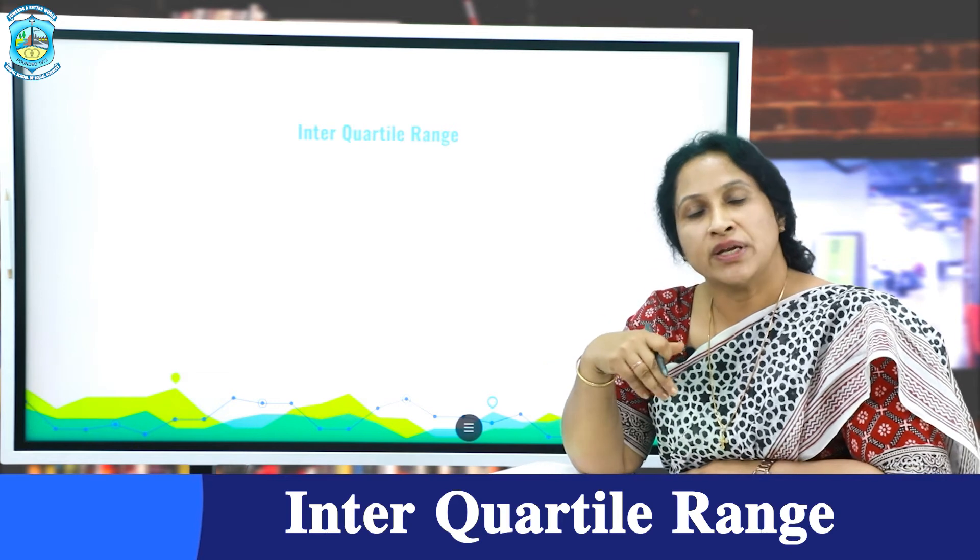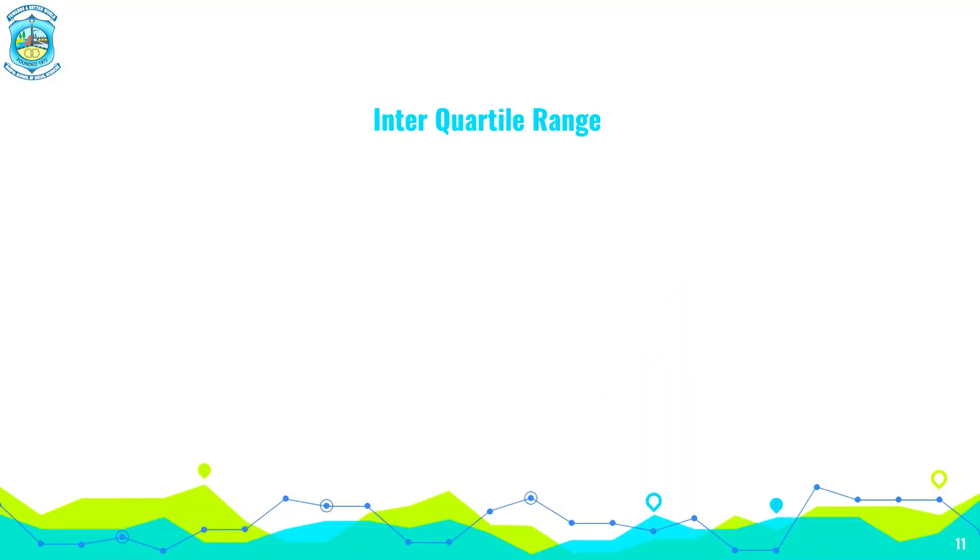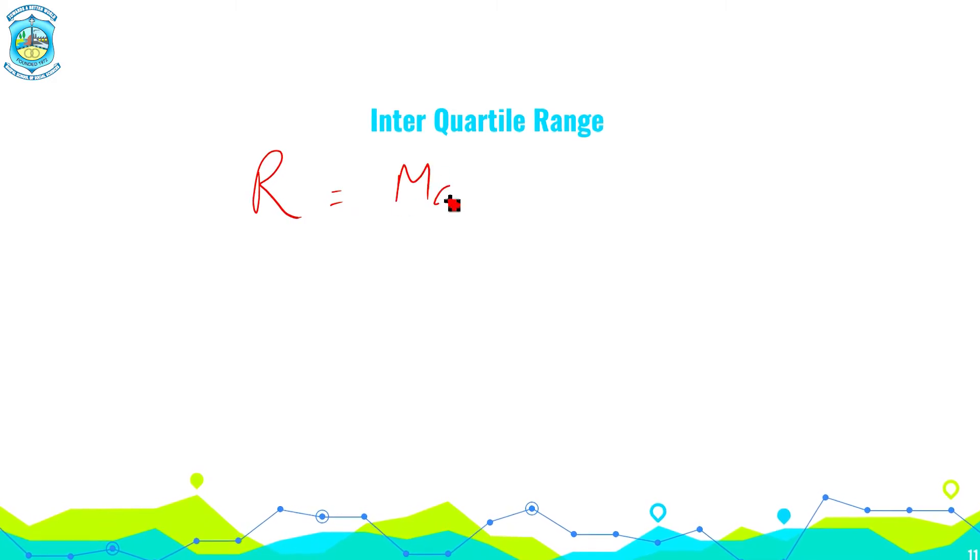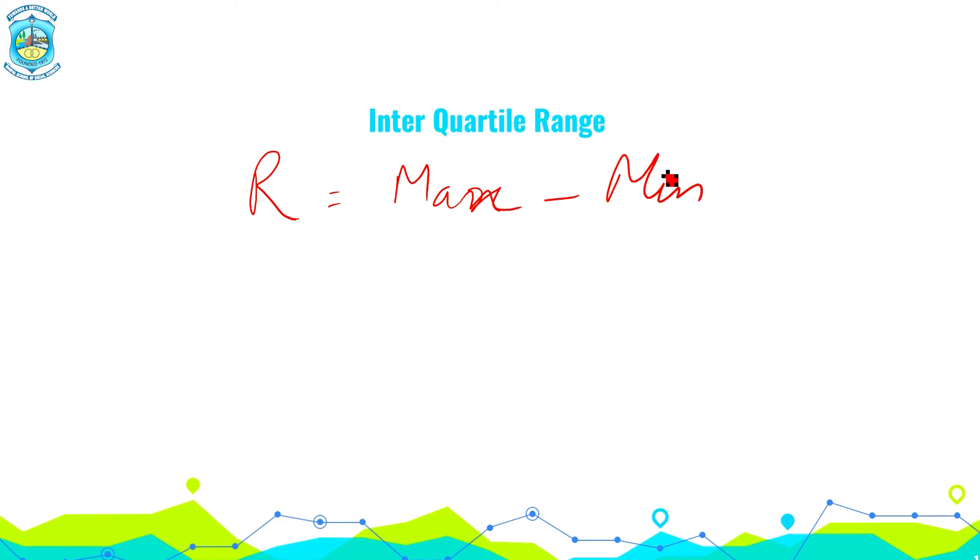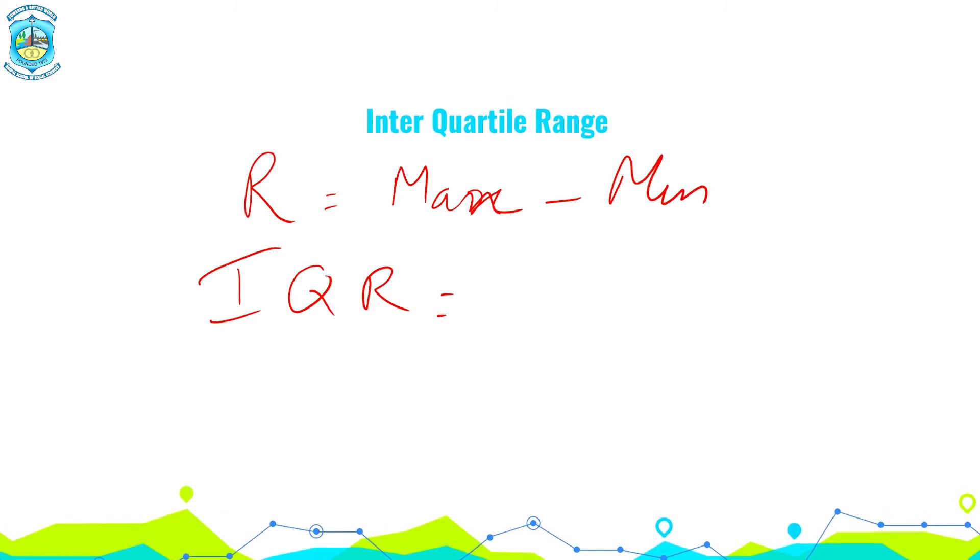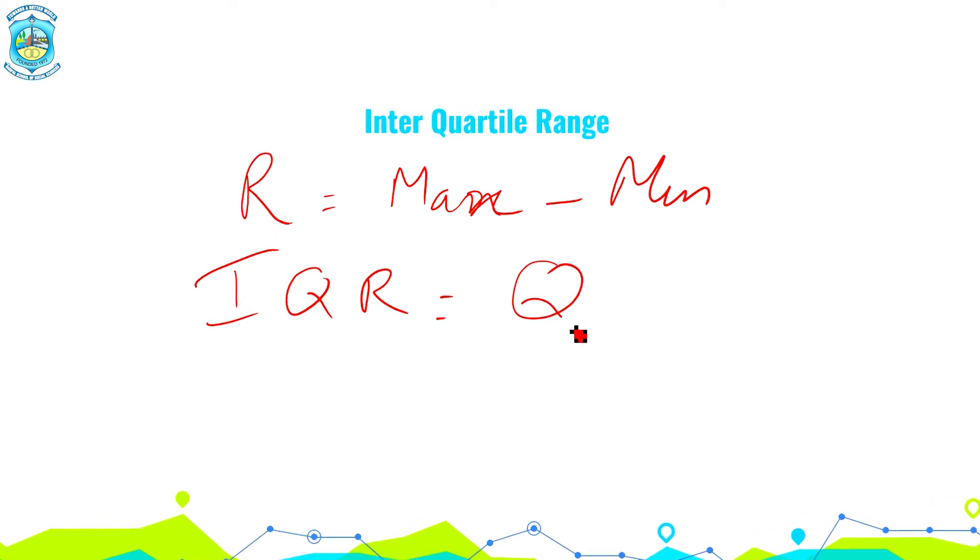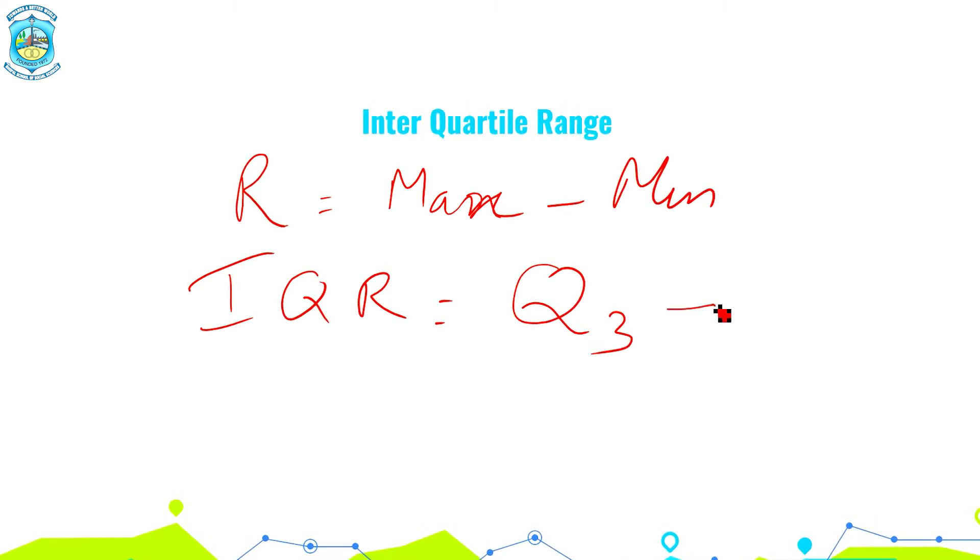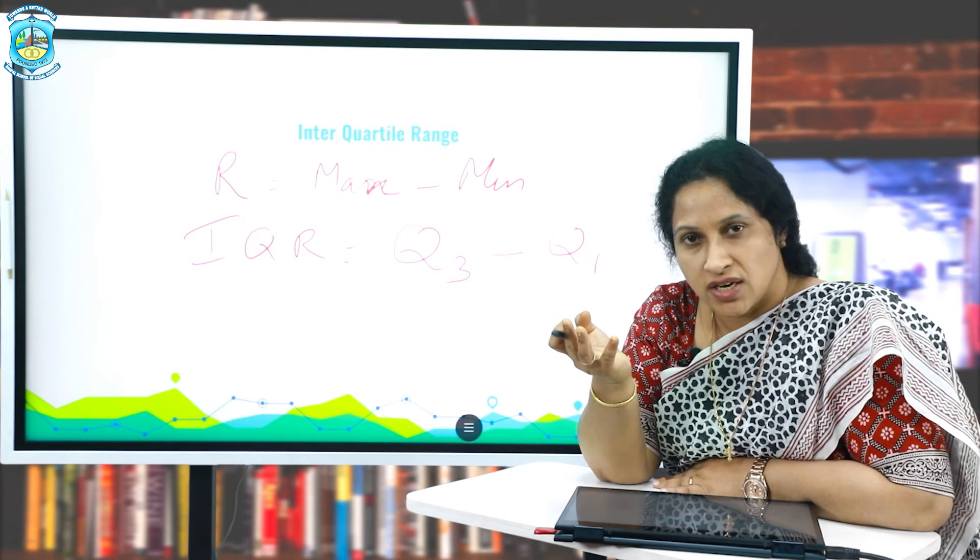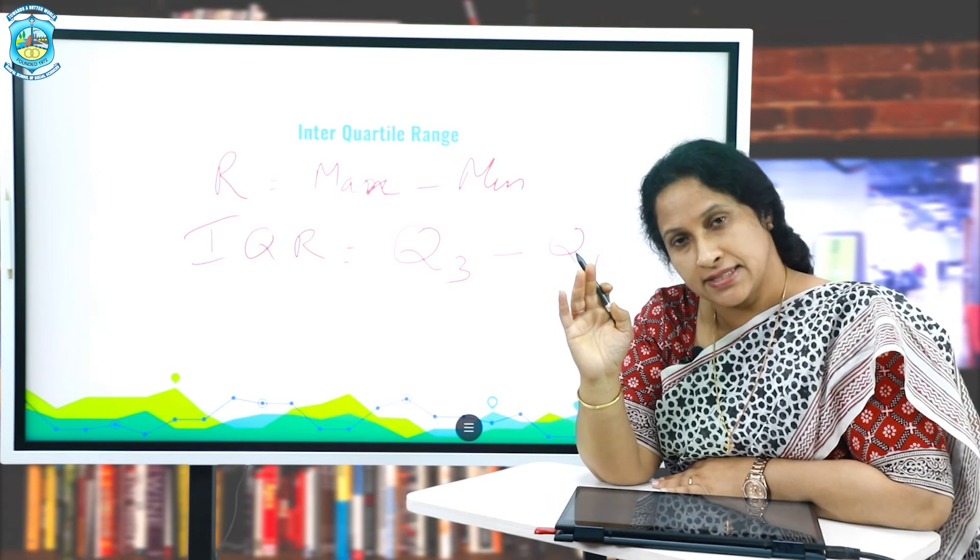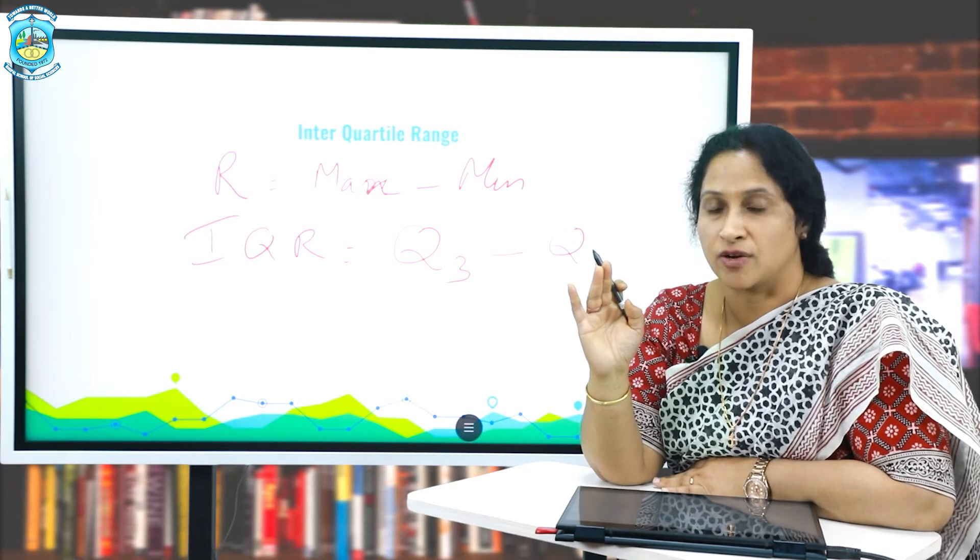Which brings me to my next concept, which is interquartile range. So what did we do in case of range? Range stood for the highest value minus the lowest value, maximum minus the minimum. So here when you are talking about interquartile range, just remember which is the highest quartile? It is called as the upper quartile, represented by Q3. And what is the lowest quartile? Which is also called as the lower quartile, this would be Q1. So Q3 minus Q1. This gives us little more information than the range. It is an upgradation over the range part.